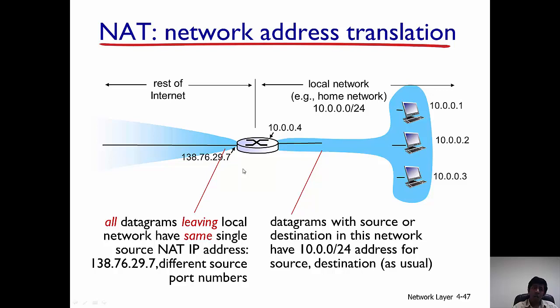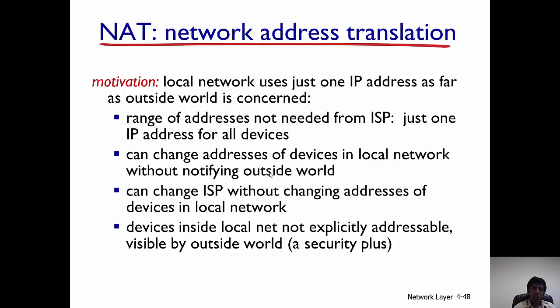This mapping of internal addresses to a single external address is what we call Network Address Translation. Why do we need NAT? For the rest of the world, you use only a single IP address, while hosts within the local network have different addresses. As a result, you need to purchase only a few IP addresses from the ISP, which is monetarily beneficial. You can also use local IP addresses within your network and change them without notifying the rest of the world.